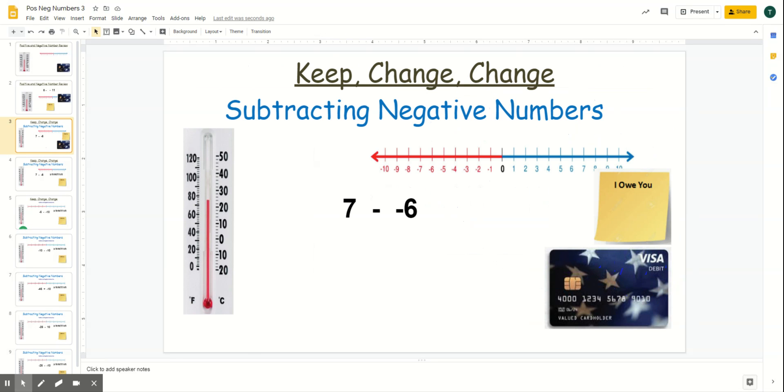All right, so today's strategy is called keep, change, change. So when it comes to different problems, this is going to be the best way for some of you guys to solve. And this is what it means. Whenever you're using positive and negative numbers, you're going to keep the first number the same, but now you can change, change the last two parts. So I'm going to change it and change it, and now I'm going to solve. I can rewrite it. So it means 7 plus 6 equals 13.